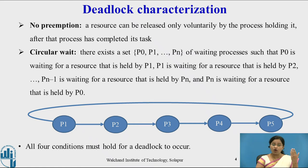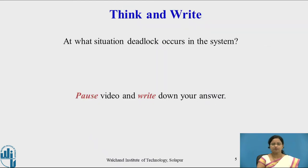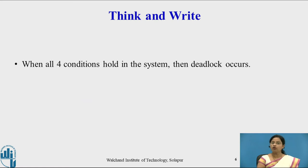When all four conditions exist simultaneously in the system, then we can say that deadlock occurs. Those four conditions are mutual exclusion, hold and wait, no preemption, and circular wait. If all these four conditions are present, then deadlock occurs in the system. Deadlock occurs whenever all four conditions hold simultaneously in the system.